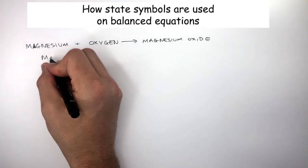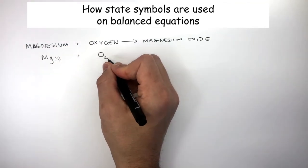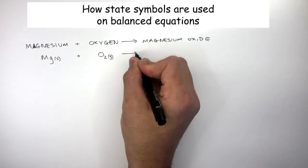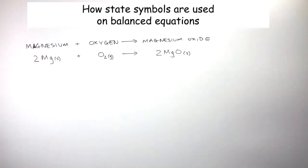Therefore, we write Mg, S in brackets for solid, reacts with O2, G in brackets for gas, reacts to form MgO, S in brackets for solid. Notice how the state symbols are written in a really small way, just to the right of the atom. Just like you do when you write the small numbers to say how many atoms are present in the molecule or compound.